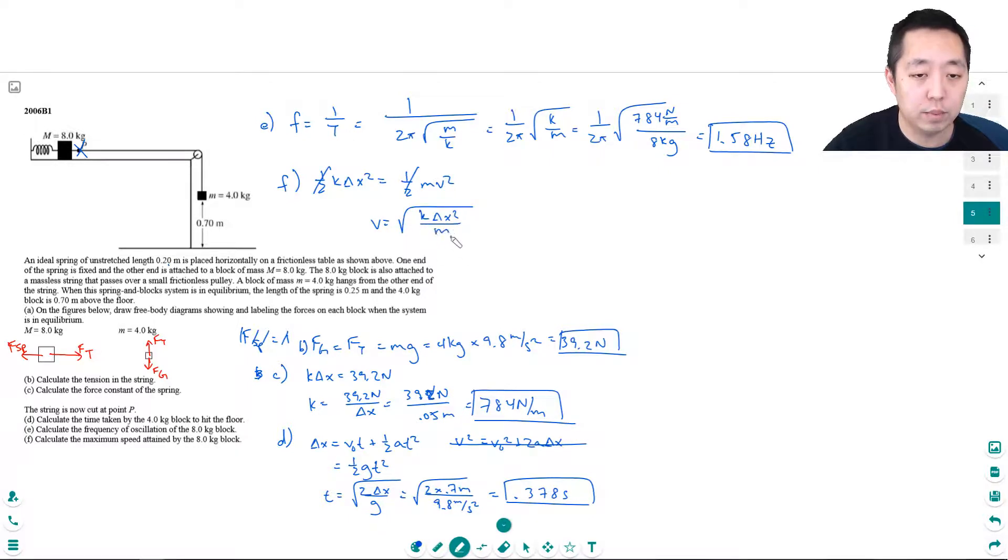k is 784 newtons per meter, delta x is the maximum displacement of the spring that was 0.05 meters, and then the mass of it is 8 kilograms.